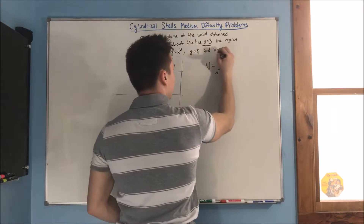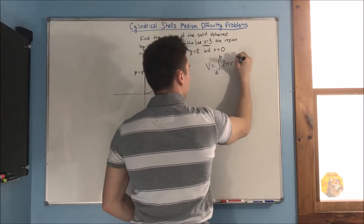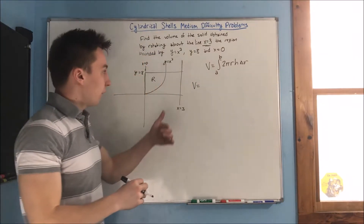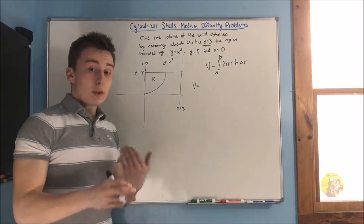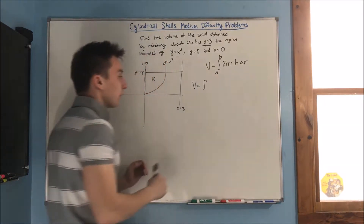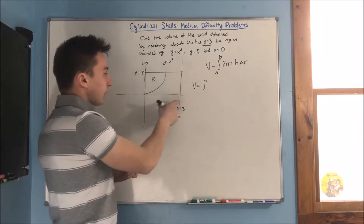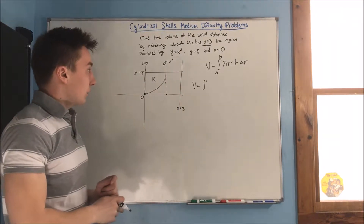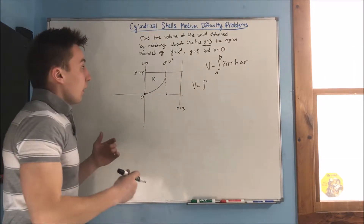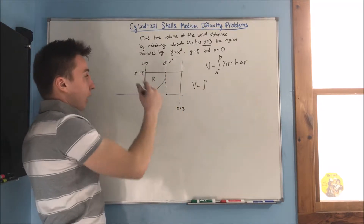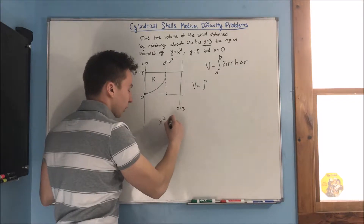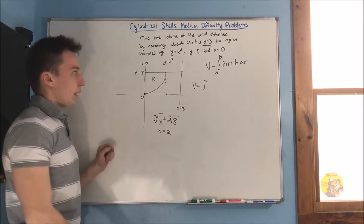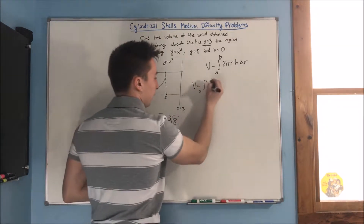Our formula is the integral from a to b of 2π r times height times the thickness, which is delta r. Since we are rotating around a vertical line, we know that we're going to be integrating with respect to x. Now we need to find those x coordinates — that's not going to be 0 to 3, because our region only extends from 0 to whatever this point is. That x coordinate is wherever x cubed equals 8. So x cubed equals 8, we take the cube root of both sides, and we get x is equal to 2. So we're integrating from 0 to 2.